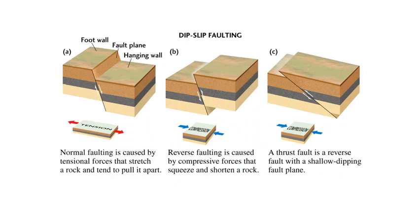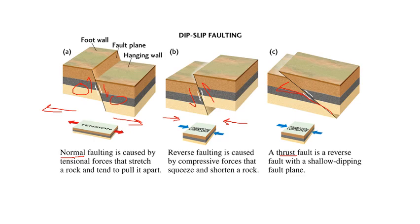If rocks are more brittle they will fault. With dip-slip faulting — faulting in the vertical dimension — if this is our foot wall and our hanging wall, and we have tensional stress pulling these rocks apart, the hanging wall moves down relative to the foot wall, and that's a normal fault. If we compress rocks together we get a reverse fault, where the hanging wall moves up relative to the foot wall. A thrust fault is just an extreme version of a reverse fault where the fault is angling and pushing those rocks over the foot wall block quite a bit.